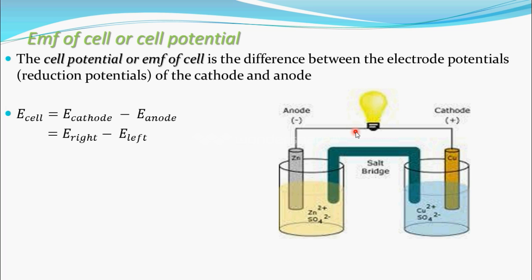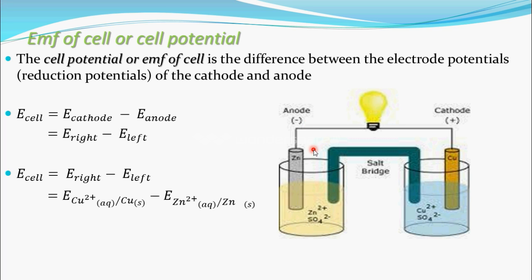Let's find the cell potential of the Daniel cell. You know that E_cell equals E_right minus E_left. The copper electrode is on the right and zinc is on the left. So: electrode potential of copper minus electrode potential of zinc = 0.34 minus (−0.76) = 0.34 + 0.76 = 1.10 V. This is the cell potential of the Daniel cell.